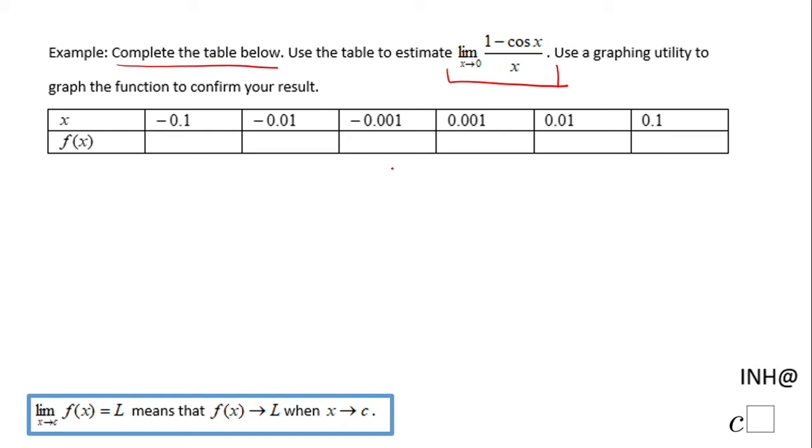And for doing this numerical way, the table, we just simply take the values in the table and plug it in. So I'm going to start with the first one, negative 0.1. I'm going to plug it in this function. Now, we're going to evaluate the value of the function at negative 0.1.